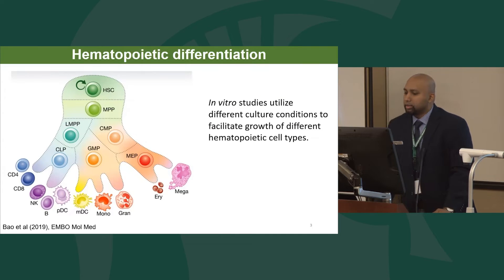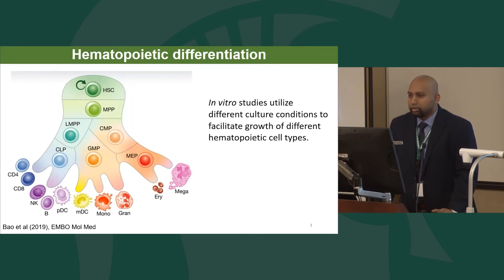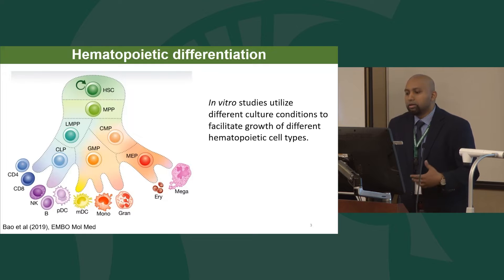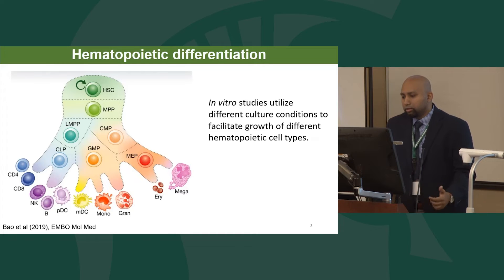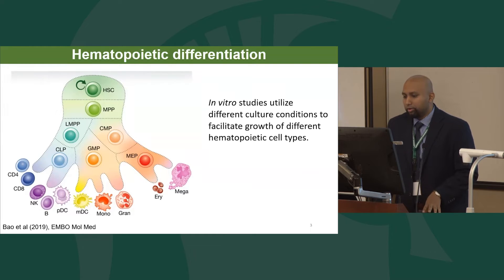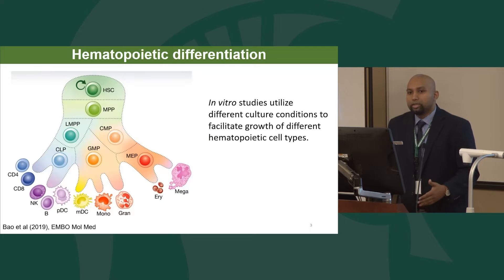Most in vitro studies currently utilize different culture conditions and different cytokines and growth factors to facilitate growth of different hematopoietic stem cells, because different cell types rely on different culture conditions for their growth. However, today I'm going to be talking about an in vitro model that can be used to follow the development of multiple cell types in one system.